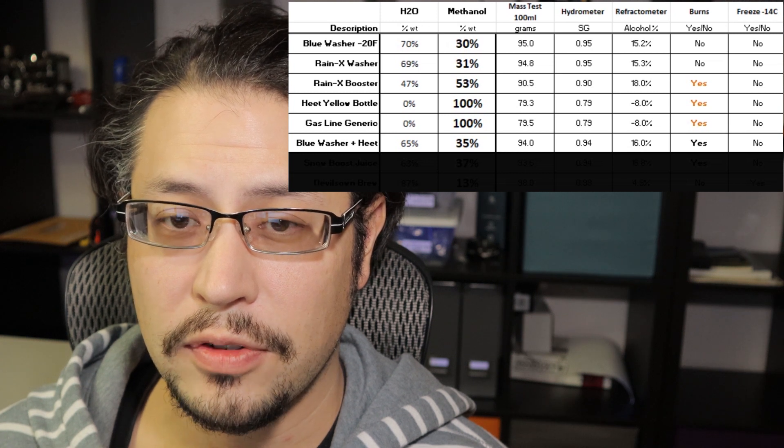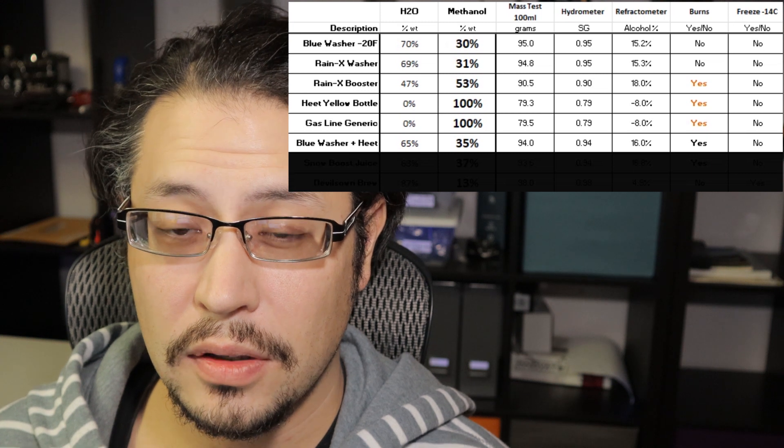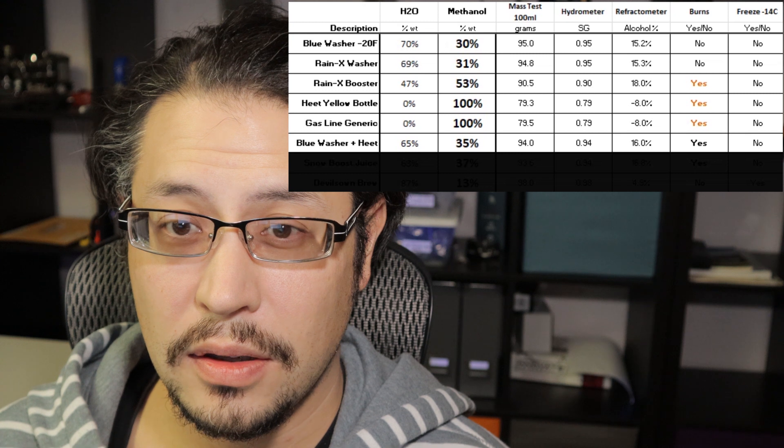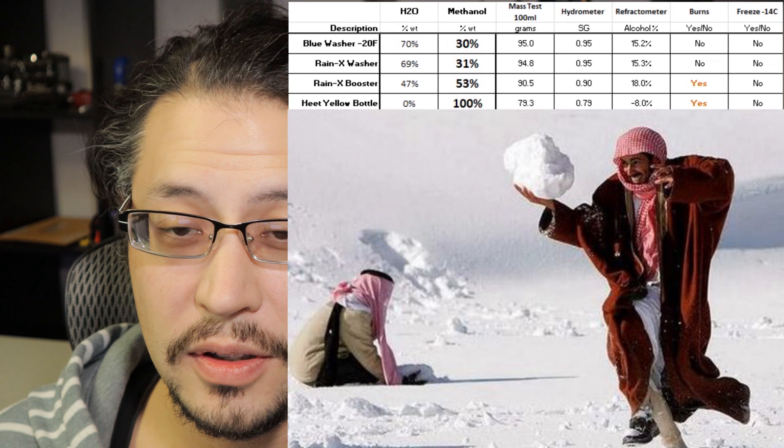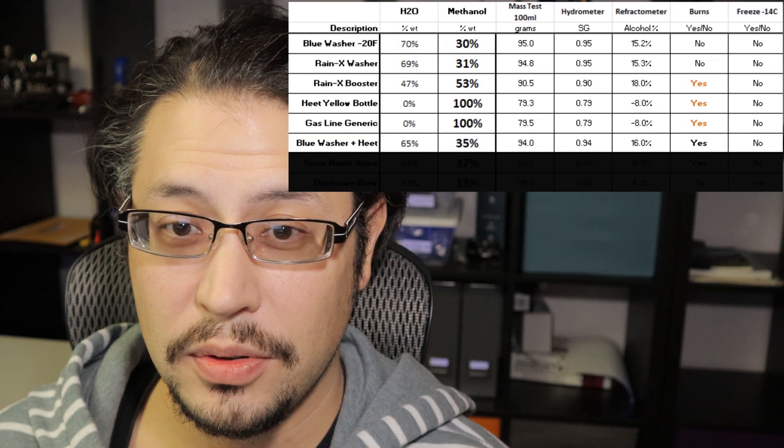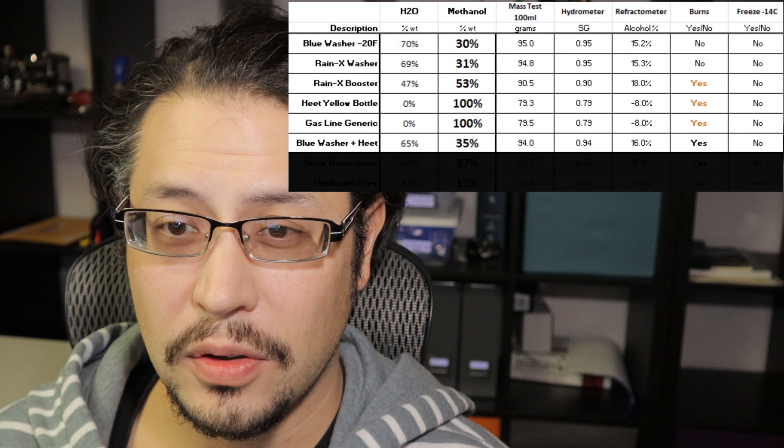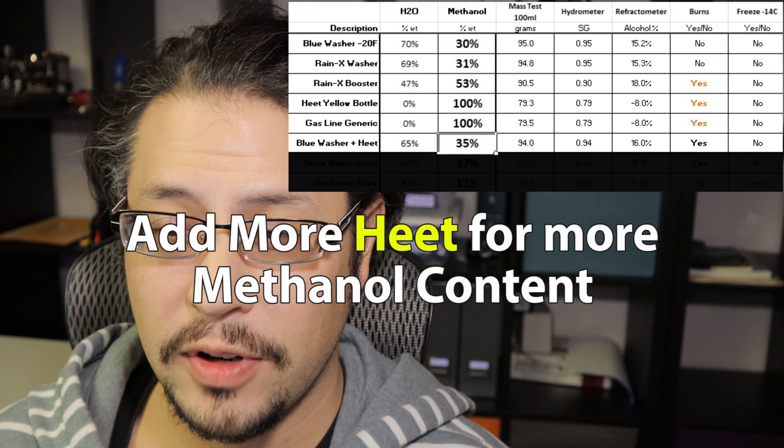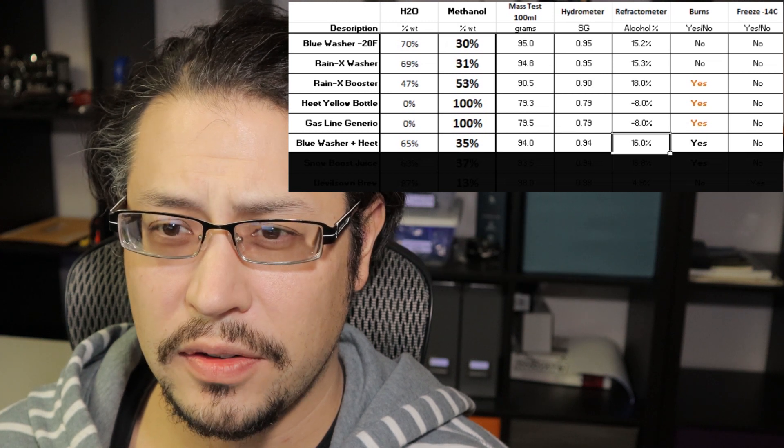Blue washer fluid, you could probably go to a big store and get it for less than $2 a gallon for the minus 20. Down south you're probably going to have trouble getting minus 20 product, and then a bottle of heat gas line antifreeze. You southerners, look at you. It just snowed 8 inches today. You can see 35% would be pretty effective.